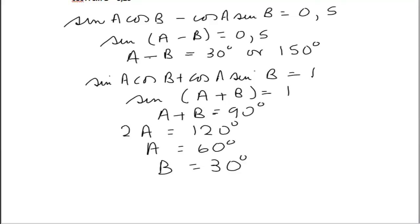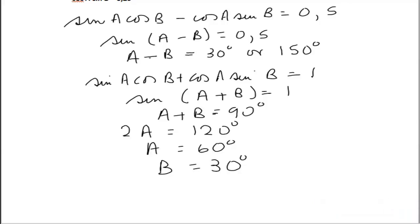For the other possibility, adding a - b = 150° with a + b = 90° gives 2a = 240°, so a = 120°, which is not feasible since a and b must be acute angles. Subtracting would yield a negative angle. Therefore the only valid answer is a = 60° and b = 30°.